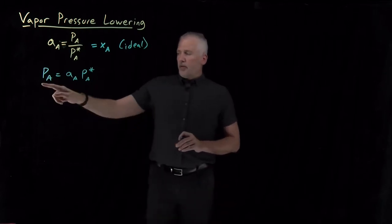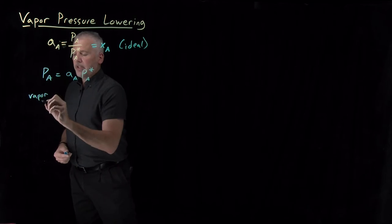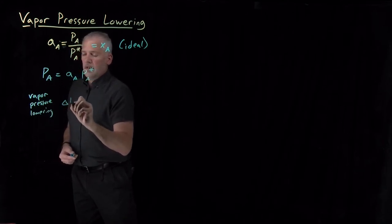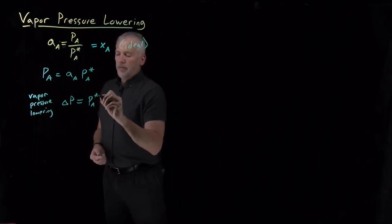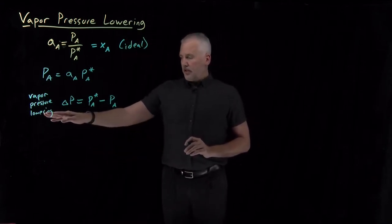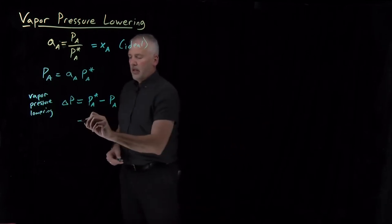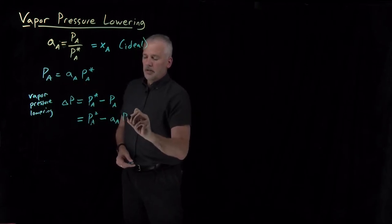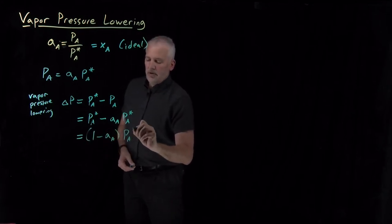Rather than talking about the actual partial pressure above a solution, we often talk about by how much the vapor pressure has been lowered. We define that change in partial pressure as what it would have been for the pure solvent minus that slightly lower value for the particular solution — that's the vapor pressure lowering. Since the partial pressure equals activity times vapor pressure, this works out to be (1 minus the activity) times the vapor pressure.